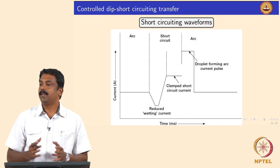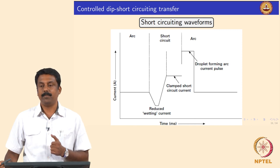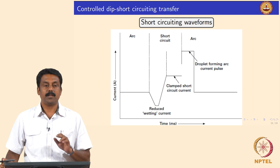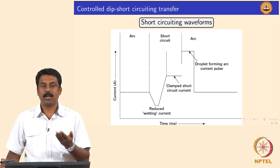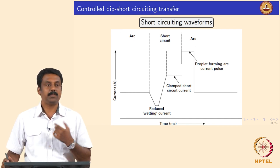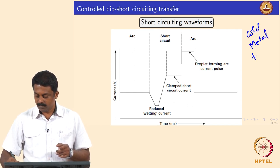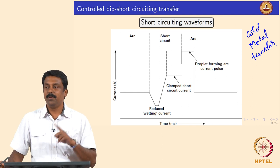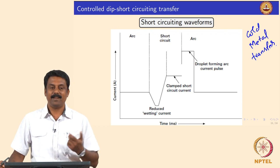That is how modern advancement took place in GMAW by modifying the current-voltage waveforms. One such waveform is shown in this slide, which is commonly used to achieve a short-circuiting transfer at extremely low droplet temperature — close to melting point. This process is known as cold metal transfer (CMT). First the video will be shown, then the waveform will be explained, and then the video will be revisited to understand it.